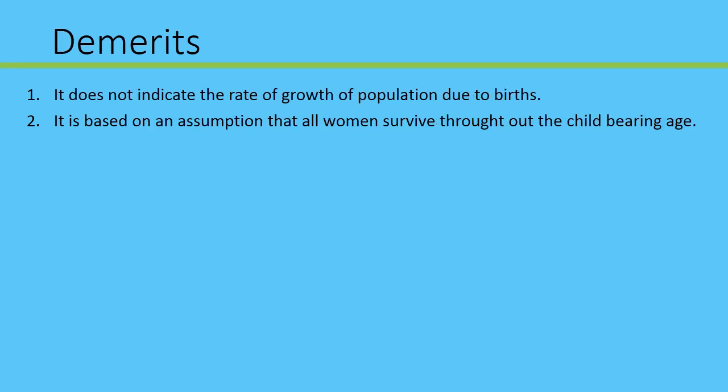Now talking about the demerits of TFR. The first demerit is that it does not indicate the rate of growth of the population due to births — this measure does not shed light on the rate of population growth. The second demerit is that it is based on the assumption that all women survive throughout the entire childbearing age, which is an unrealistic assumption.